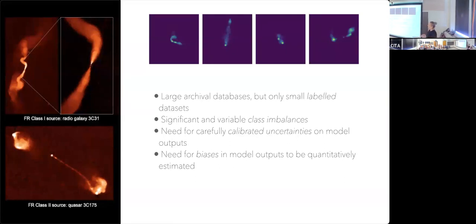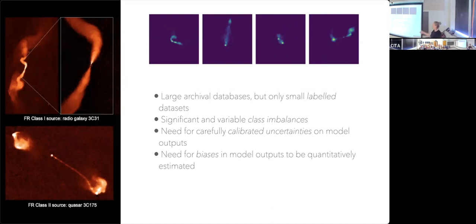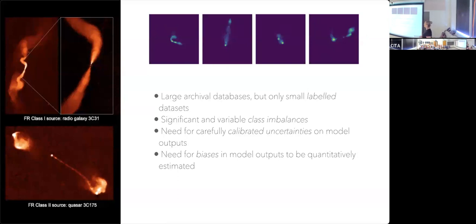More generally in astronomy, some of the issues we have are: we have large archival databases but only small labeled datasets. If we want to do supervised classification, we don't really have large labeled datasets. I thought FR1s and FR2s were well known — the FIRST surveys have millions of sources — but you can only find catalogs of about a thousand labeled sources in a systematic way. We also have significant and variable class imbalances. An AI model will be biased by class imbalances, and its training dataset will also be biased if you don't have the same balance between your training and test data.